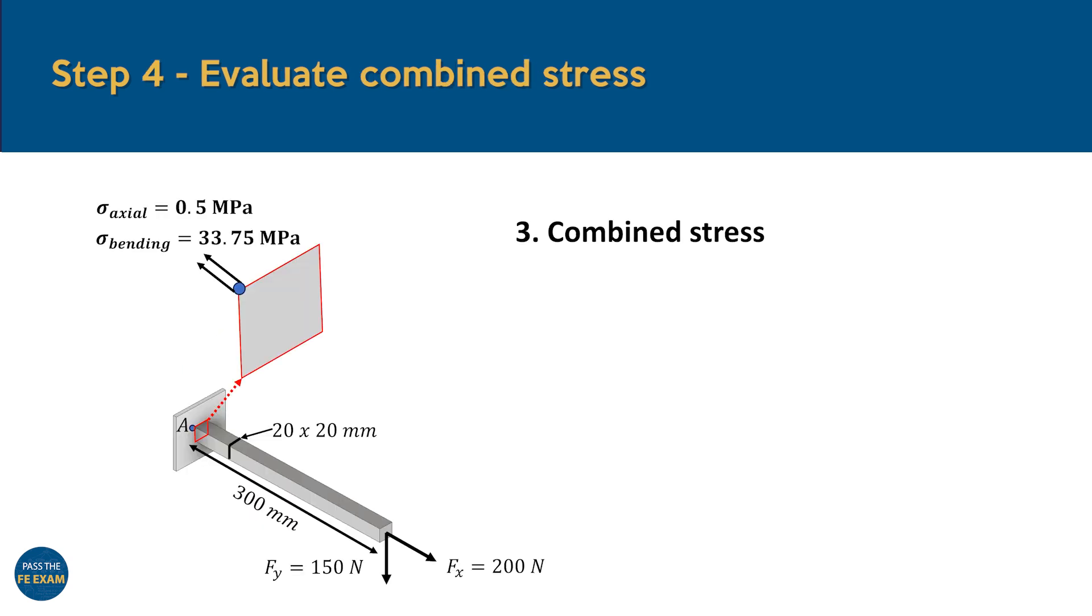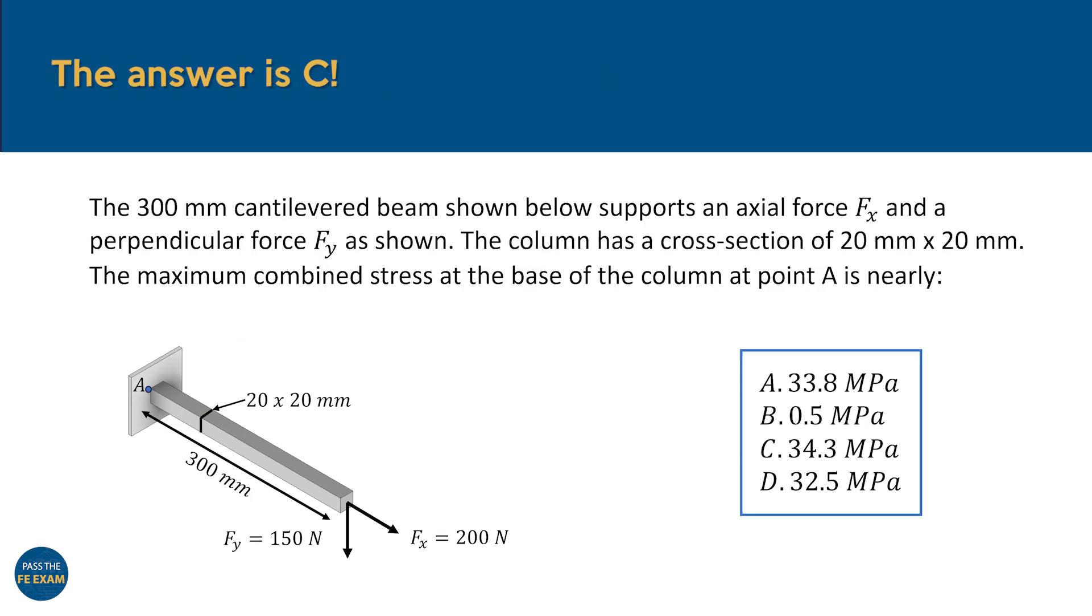Finally, all that is left to do is look at the combined effect of both of these stressors. In this case, we got lucky because both the axial and bending stressors act in the same direction, allowing us to simply add the two stressors from each loading case. When we sum them up, the total combined stress at point A comes out to be 34.25 MPa. And that completes our problem. Comparing our solution to the given options, we find that the correct answer is C.